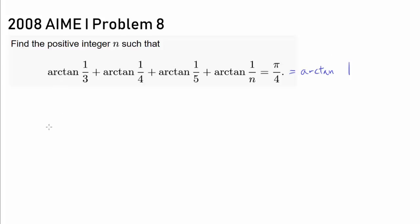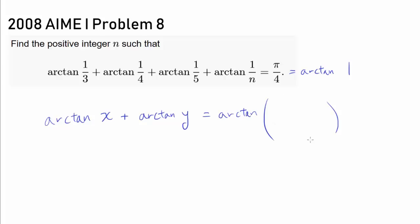We should try to find an equation that allows us to evaluate arctan(x) + arctan(y). If we know an equation that lets us add arctan(x) + arctan(y) to get arctan of some expression in terms of x and y, then we can add up the left side step by step and find the answer.